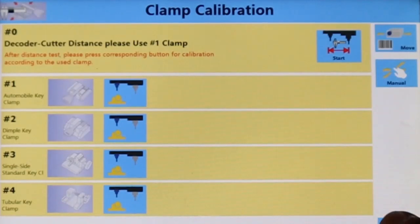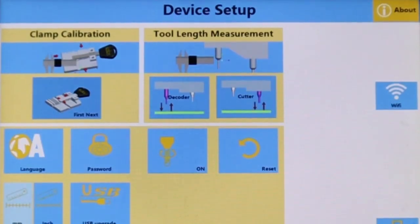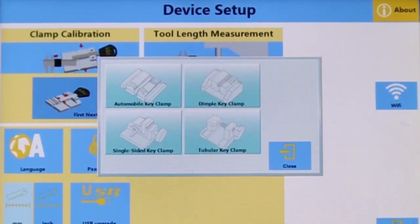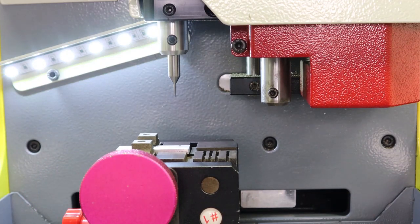Once that is completed, press exit. Click on setup and under tool length measurement, click decoder automobile key clamp and begin the tool length measurement calibration.